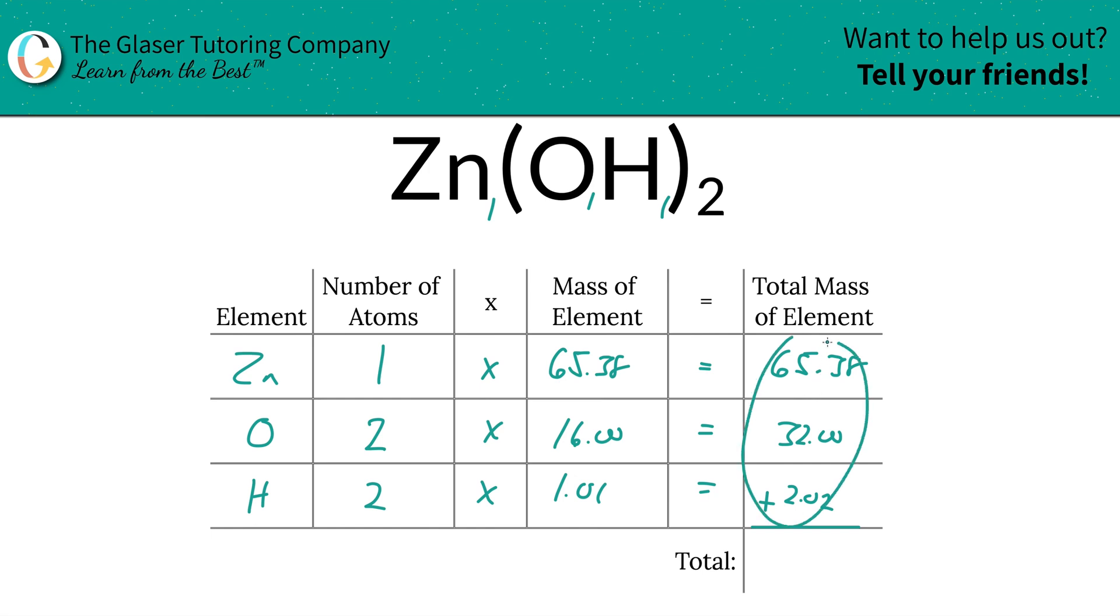Total mass of the compound now is just simply found by adding up this particular column. It's as simple as that. And it's going to be 99.40. And the units there are in AMU, atomic mass unit, because we're finding the molecular mass.